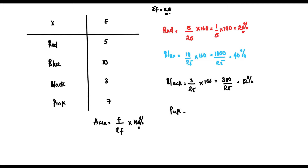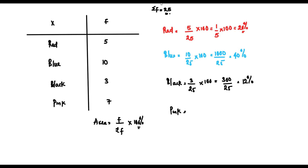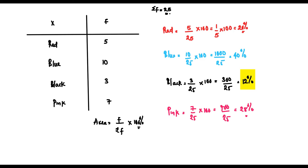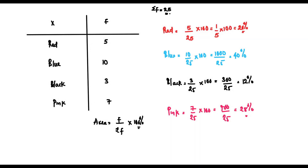For color pink, we have 7 divided by 25 times 100, which gives us 700 divided by 25, and that equals 28%. So if we sum up all of those areas — 20% plus 40% plus 12% plus 28% — that gives us 100%. As you can see, the variable with the highest frequency, which is blue, has the highest percentage of area. Let's have a sketch of that — a big circle.